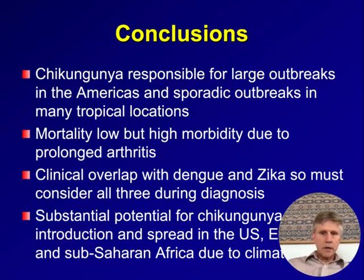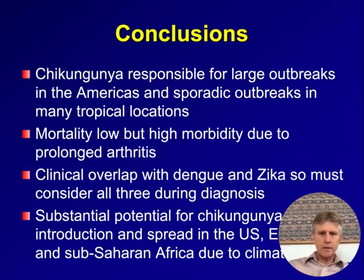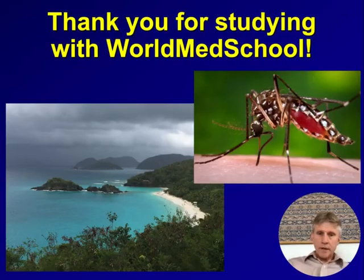In conclusion, chikungunya has been responsible for large outbreaks worldwide and continues to cause sporadic outbreaks, including recently in Paraguay and Minas Gerais, Brazil, concurrent with a dengue outbreak. Mortality is very low, but there is substantial morbidity from prolonged arthritis. There is significant clinical overlap with dengue and Zika, and there is great potential for spread into Western Europe and the United States in the future due to climate change.